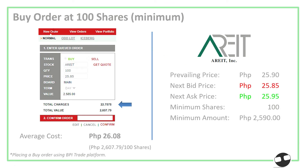What if you buy 100 shares? That's the minimum. If you plug an order into your platform, you have your buy, the security name Ariad, quantity 100 shares, and the price — say you wanted to buy at ₱25.85. The gross value is ₱2,585, and after charges the total value is ₱2,607. So instead of a cost per share of ₱25.85, the adjusted average cost per share is now ₱26.08, which is ₱2,607.79 divided by 100 shares.